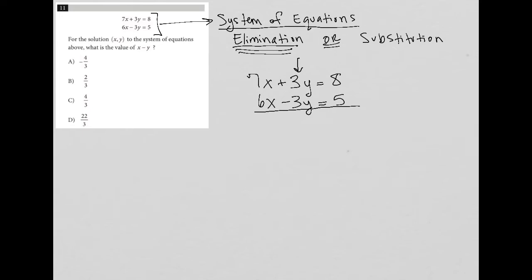Those two will automatically eliminate each other when I add the equations together. When I add the equations together, I get 7x plus 6x, which is 13x. 3y minus 3y is eliminated because that's just 0. And then 8 plus 5 is 13. Divide both sides of the equation by 13, and what I end up with is that x equals 1.